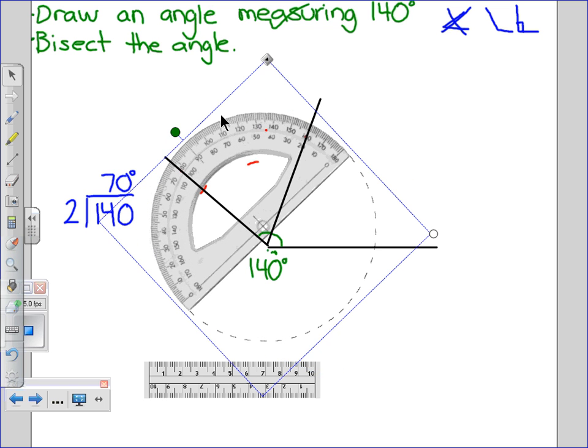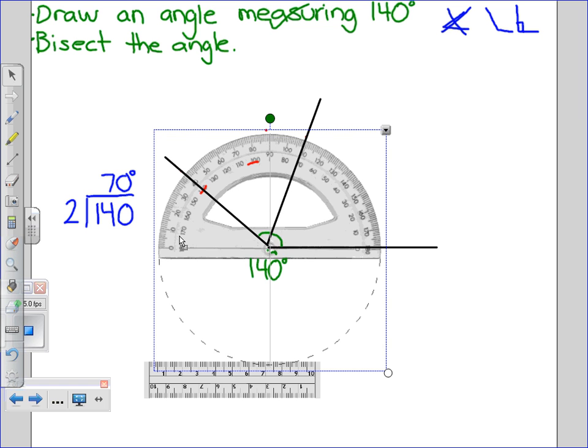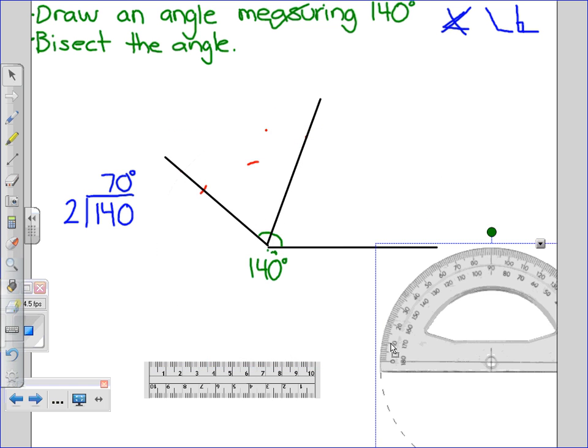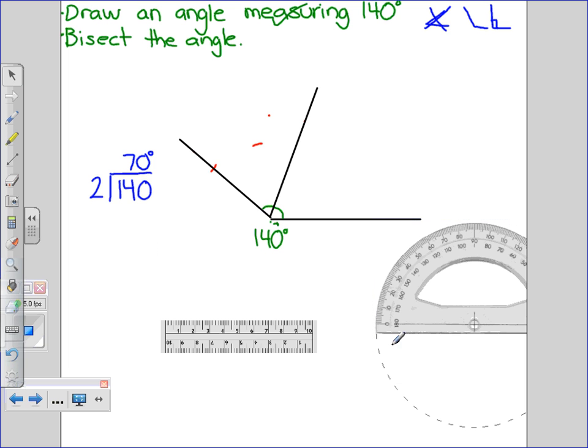And now, if I was to take my protractor, once again, measure that angle. It should be on 70 degrees, which it is. I move my protractor. I make a notation that I have a 70 degree angle here, and a 70 degree angle here. And now, I have bisect the angle.